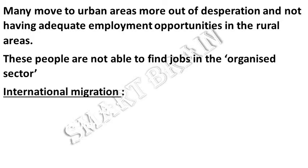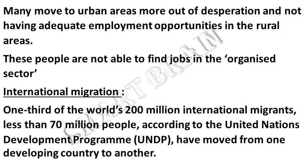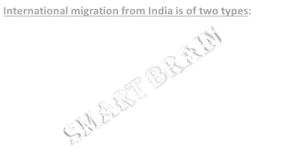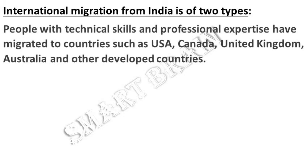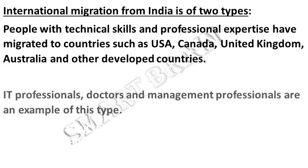International migration: One third of the world's 200 million international migrants — less than 70 million people, according to the United Nations Development Programme — have moved from one developing country to another. International migration from India is of two types. People with technical skills and professional expertise have migrated to countries such as the USA, Canada, the United Kingdom, Australia and other developed countries. IT professionals, doctors, and management professionals are examples of this type.